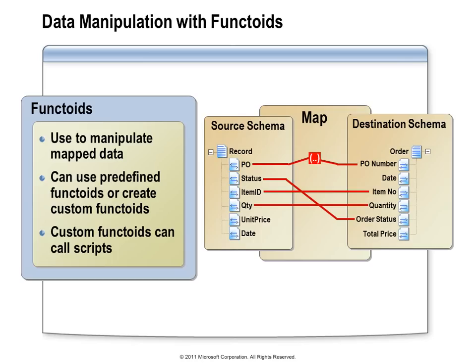For the date field, if the destination system isn't interested in the source date but wants to know when the message was sent from BizTalk, we can use the date functoid, which outputs a string representation of the current date. If the destination schema requires a total price rather than unit price, we use the multiplication functoid to multiply quantity by unit price. There are many built-in functoids, and it's also possible to create custom functoids, use a scripting functoid with your own script code, or call your own .NET classes.